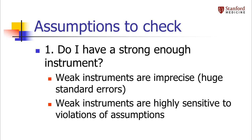The validity of an instrumental variable study depends heavily on the validity of the instrument. You have to check the assumptions I described. One thing you need to verify is that the instrument is indeed related to the exposure — and it can't just be weakly related; it has to have a sufficiently strong relationship. If the instrument explains very little of the variation in the exposure, then our IV estimate is going to be based on very little data, and it will therefore be imprecise and unreliable.